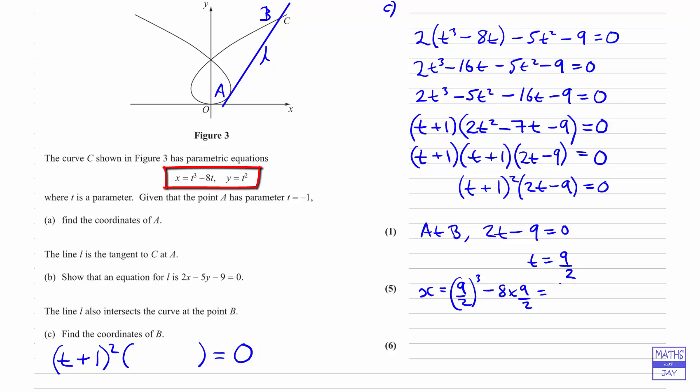So if you're writing this as a top-heavy fraction, that's going to be 441 over 8. If you prefer decimals, that's going to be 55.125, and Y, nice and simple, is 9 over 2 squared. So squaring each bit individually gives us 81 over 4. So B has coordinates 441 over 8, 81 over 4.